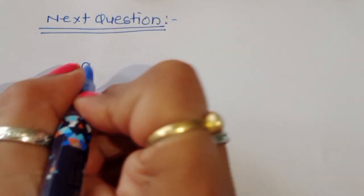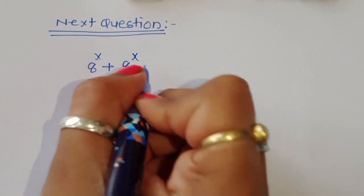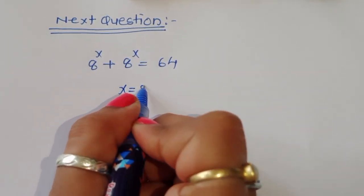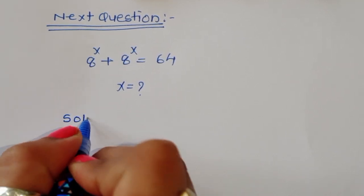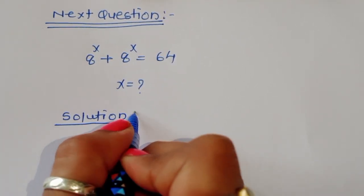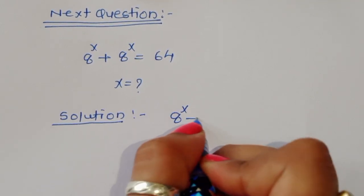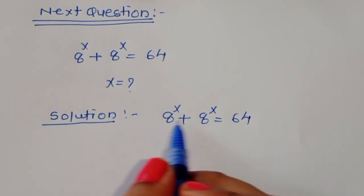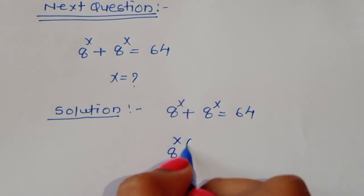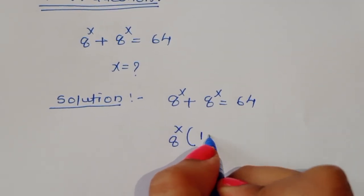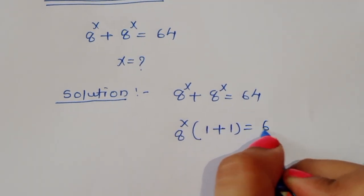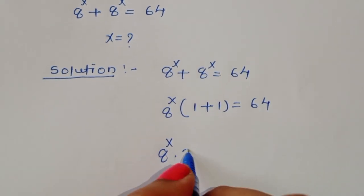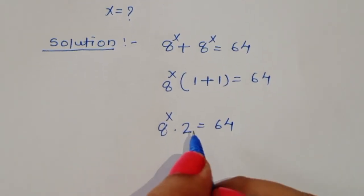The next question is: 8 power x plus 8 power x is equal to 64. We have to find the value of x. We can take 8 power x as a common factor. Factoring it out gives 8 power x times (1 plus 1), which equals 64.